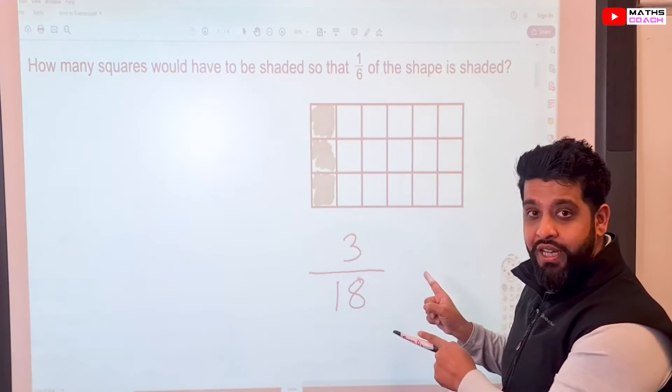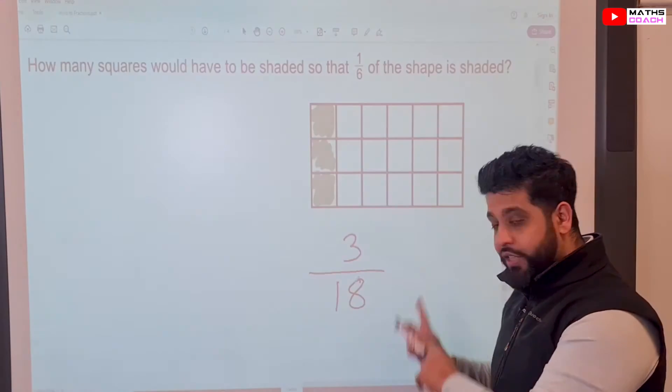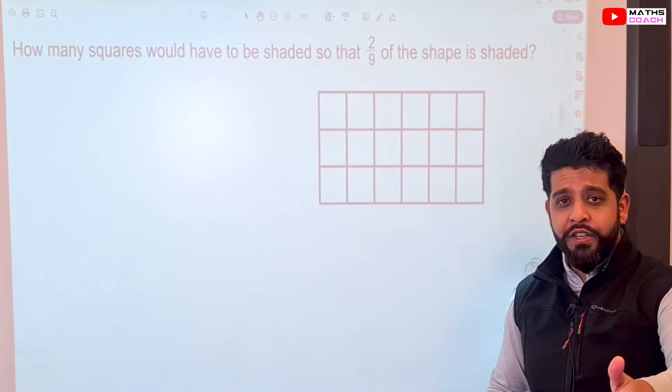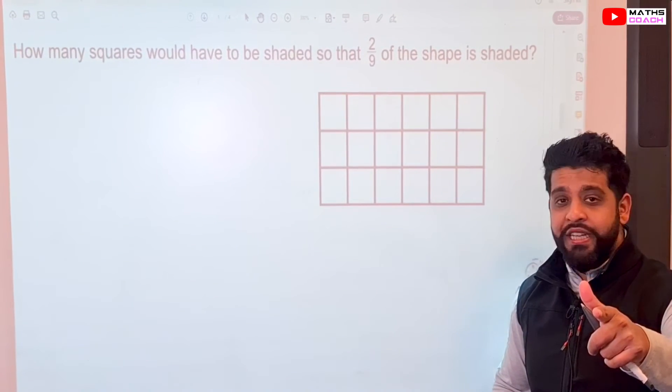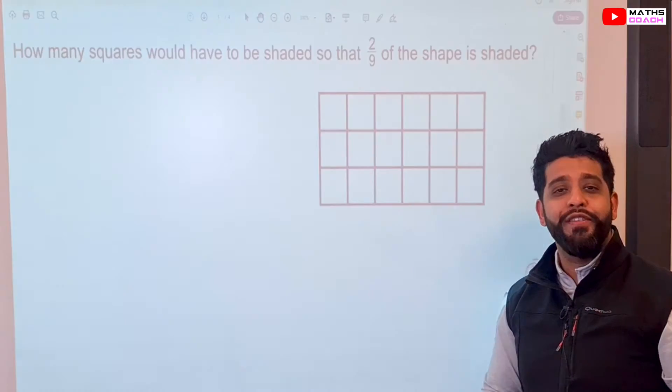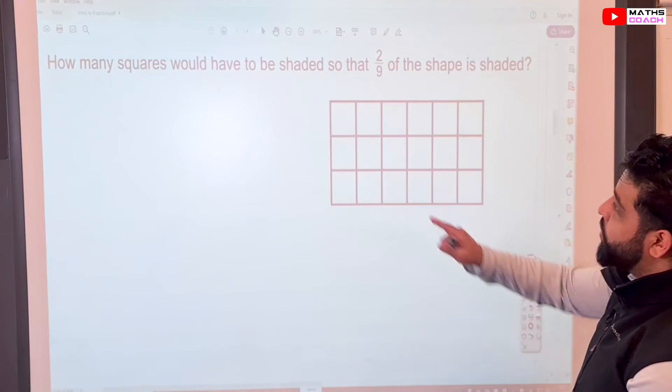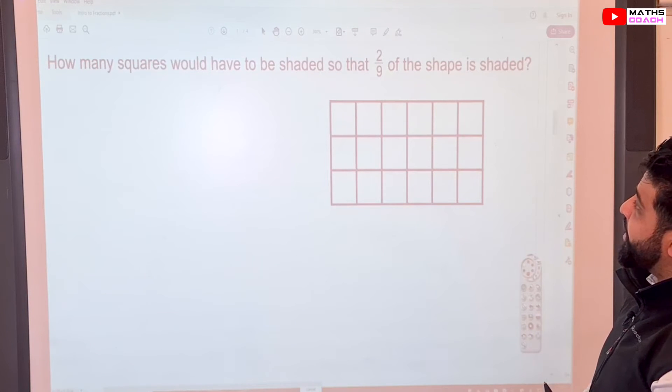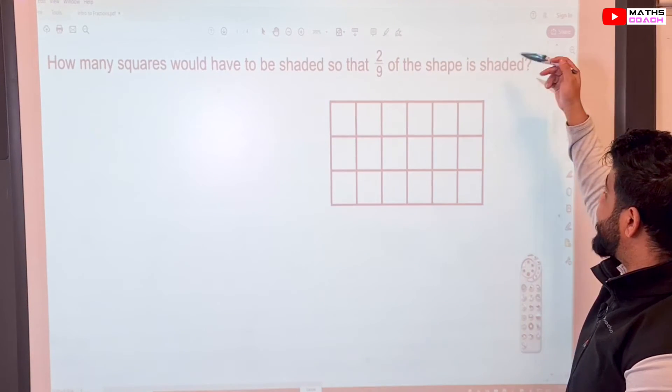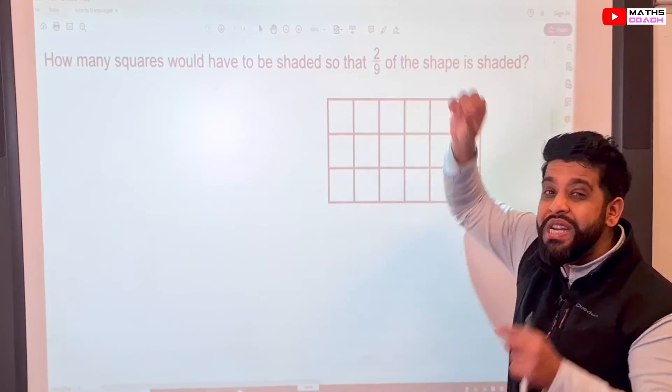Let's move on to another question like this so you can practice what you've just seen. Have a go at this one yourselves. Press pause on the video and then press play when you're ready again. Obviously, you might need to copy this down in your notebook. All right, you're back. How many squares would have to be shaded so that two out of every nine of the shape is shaded? So two ninths.